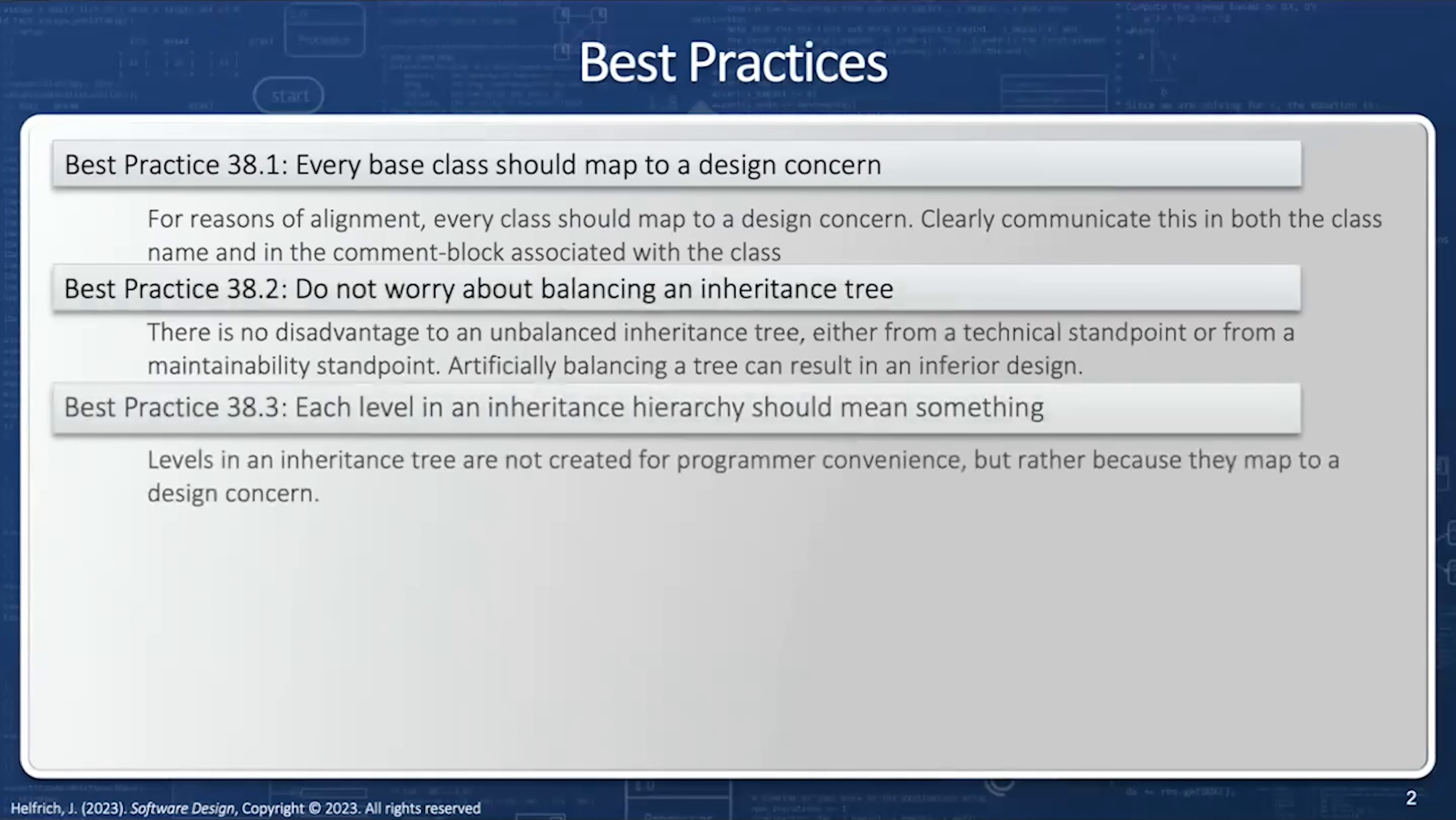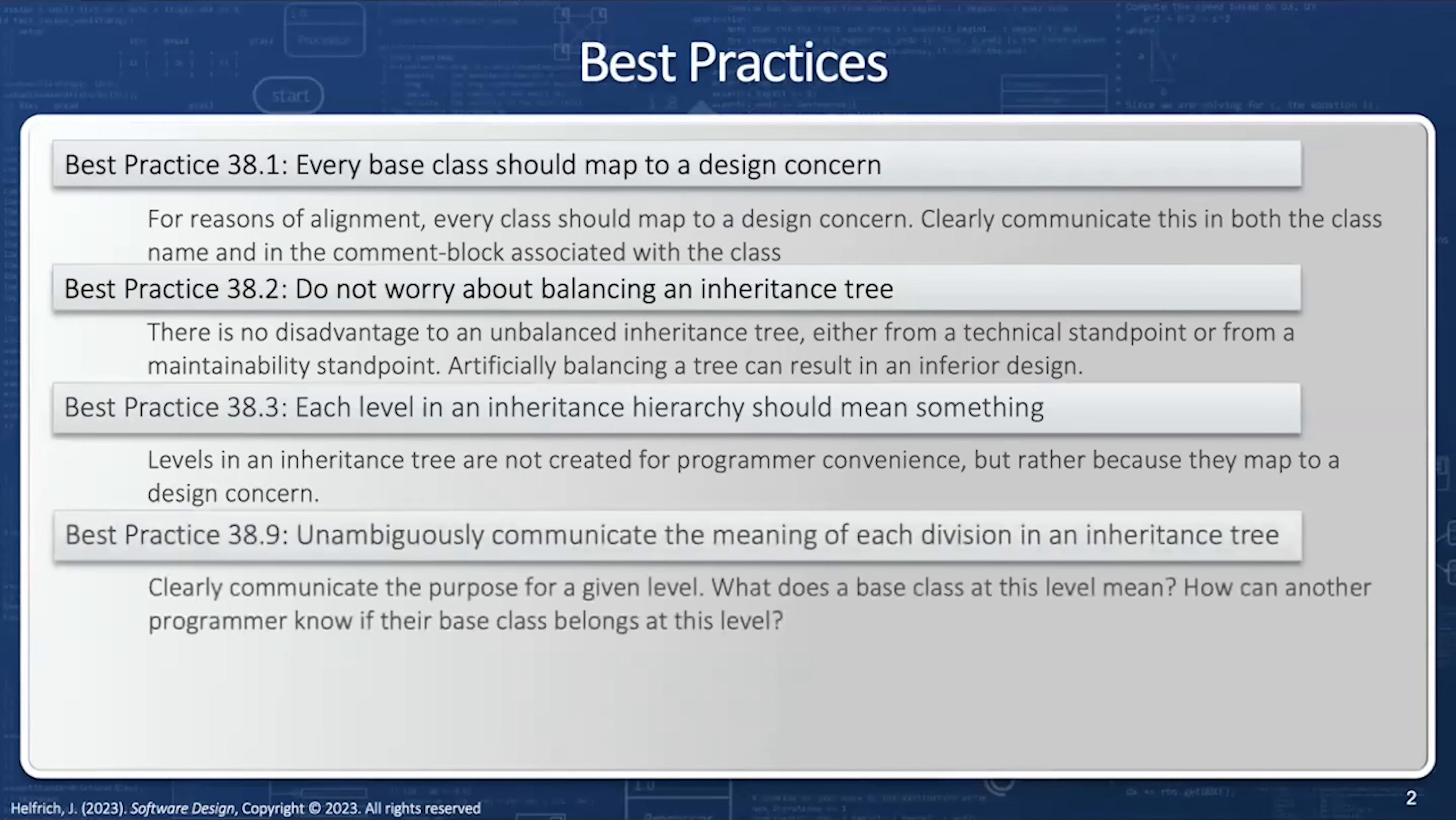Next, each level of an inheritance tree should mean something. Levels in an inheritance tree are not created for programmer convenience, but rather because they map to a design concern. Next, unambiguously communicate the meaning of each division in an inheritance tree. What does the base class at this level mean? How can another programmer know if the base class belongs at this level?